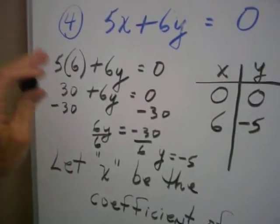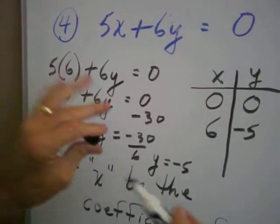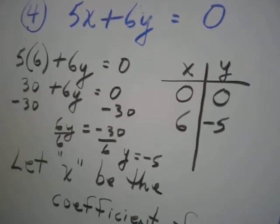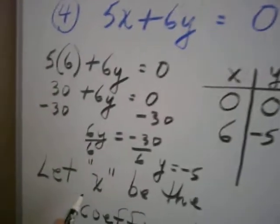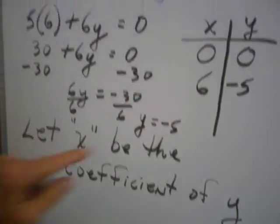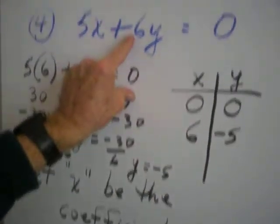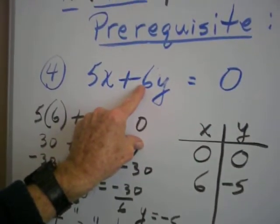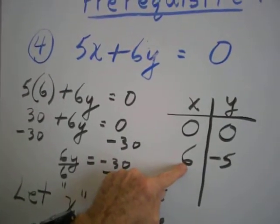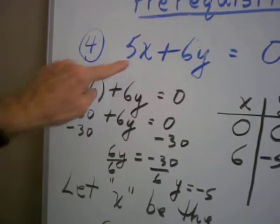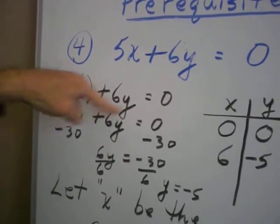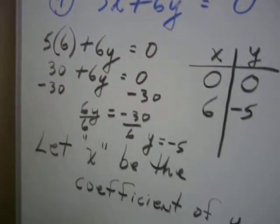Take that negative 5 and write it across from the positive 6 — that will be the only work you have to do. So to get the second point, let X be the coefficient of Y, which is 6. Substitute that X value of 6 into the equation and solve for Y. We get negative 5.